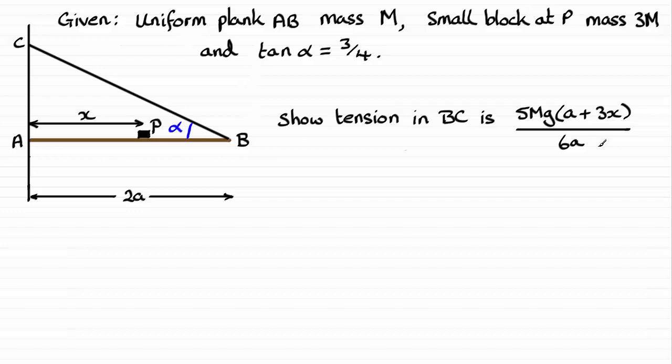First of all, we need to mark on the forces acting on this plank which we're modeling as a uniform rod. Being a uniform rod, its weight is going to act in the middle here. It acts downwards. The weight will be the mass times acceleration due to gravity, mg. We're not told the units, so I'm just going to leave it as mg. We've also got the weight of the small block which we're assuming is a particle. That's going to act downwards. Its mass is 3M, so therefore its weight will be 3mg.